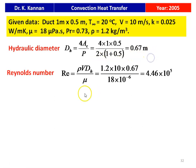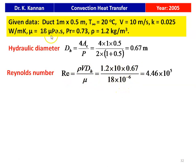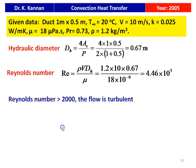Then we calculate the Reynolds number: Re = ρVD_H / μ = 1.2 × 10 × 0.67 / (18 × 10⁻⁶) = 4.46 × 10⁵. So Reynolds number equals 4.46 × 10⁵.